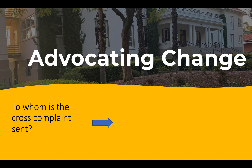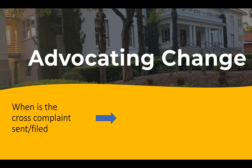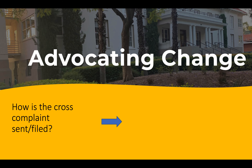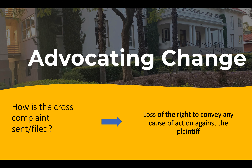Who is the cross-complaint sent to? It must be sent to the original plaintiff in the lawsuit. When is the cross-complaint sent or filed? It must be filed before or at the time of the defendant's answer. The defendant has 30 days to file a cross-complaint accompanied by a proof of service. As to how the cross-complaint is filed, the defendant must file the cross-complaint to the plaintiff within 30 days, or he or she will lose the right to convey any cause of action against the plaintiff, and the lawsuit will proceed accordingly.